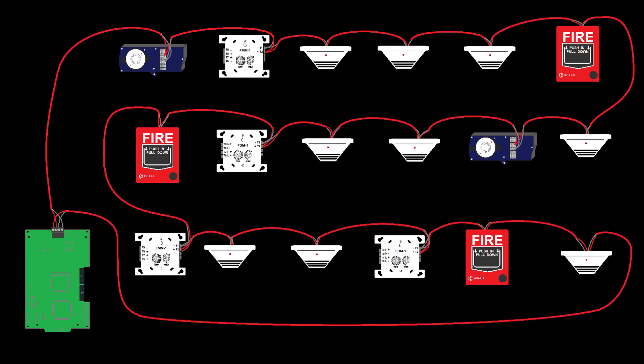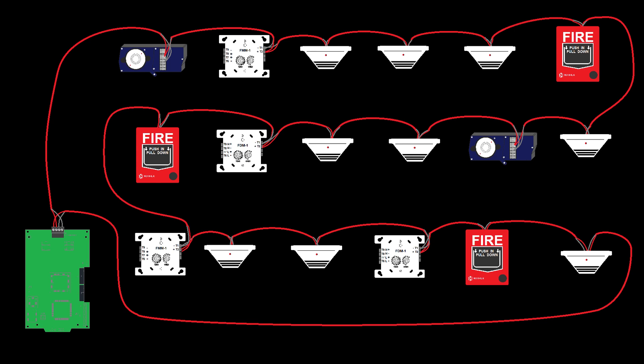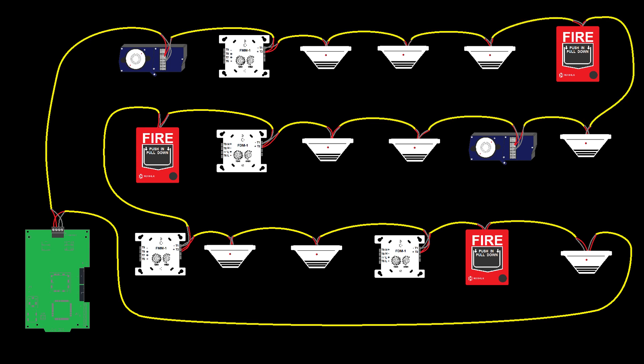All of our loops will be configured as style 6, which simply means a Class A SLC loop. For an SLC circuit to be style 6, it will leave the panel, go into and out of each device in parallel, and return back to the panel with no T-taps.